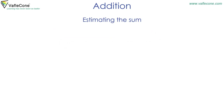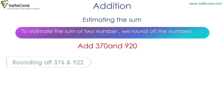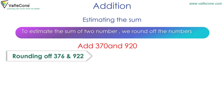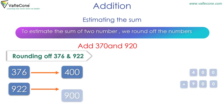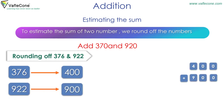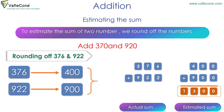Estimating the sum: to estimate the sum, we round off the numbers. To add 376 and 922, we round off 376 to 400 and 922 to 900. Adding 400 and 900 gives an estimated sum of 1300. The actual sum of 376 plus 922 is 1398.